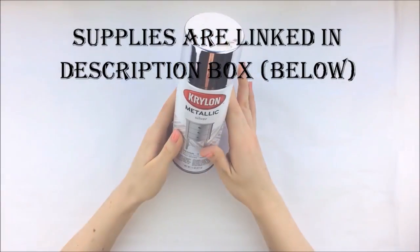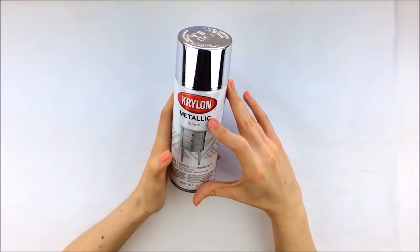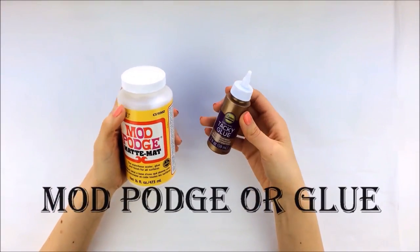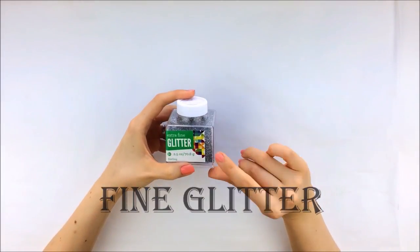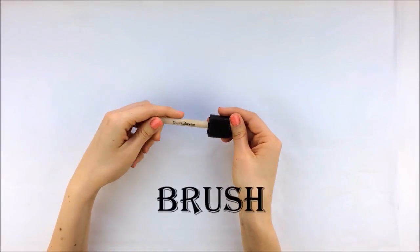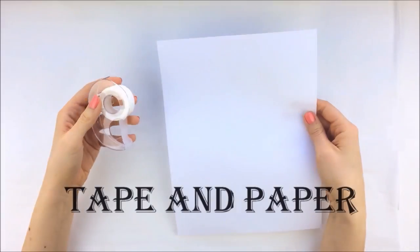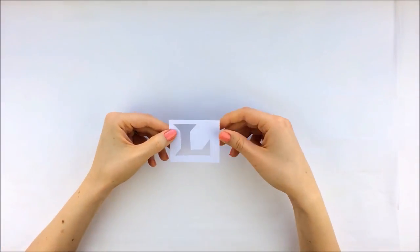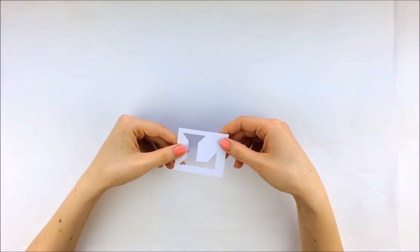For this pen cup you'll need a mason jar, metallic spray paint - I'm using Krylon metallic in silver - either mod podge or tacky glue, fine glitter - I'm using silver glitter - a brush for applying the mod podge or glue, a piece of paper, and some tape.